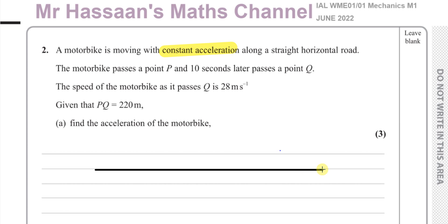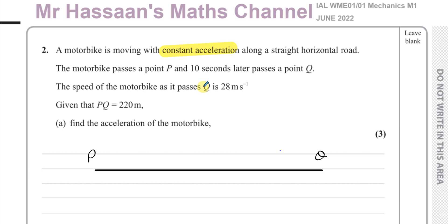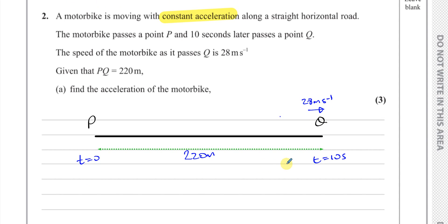So it's going along this road between P and Q. Say this is the point P at the beginning and this is the point Q at the end. The speed of the motorbike as it passes Q is 28 meters per second, and the distance between P and Q is 220 meters. We also know that when time was zero at P, at Q time was 10 seconds. We don't know the speed of the motorbike at P or any other point — this is all the information we have to find the acceleration.